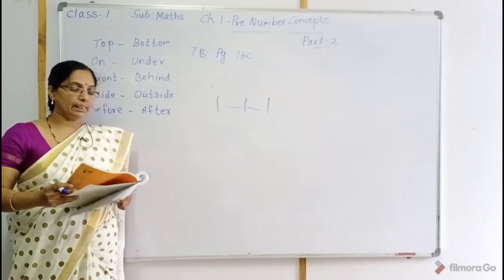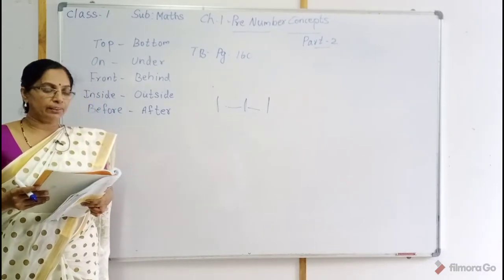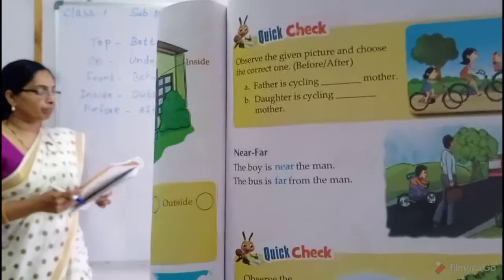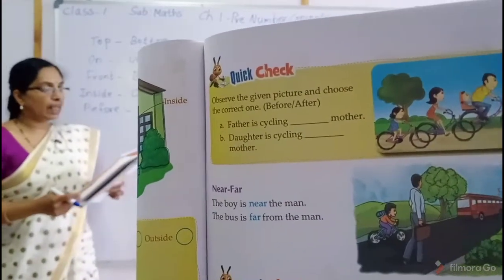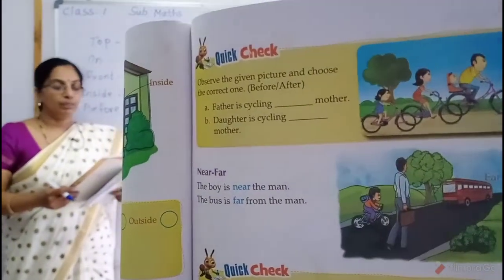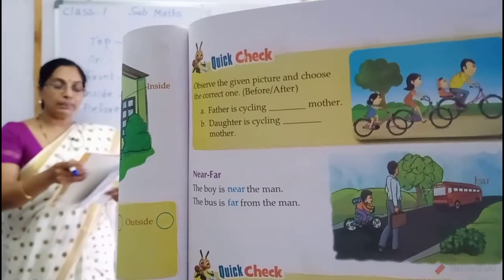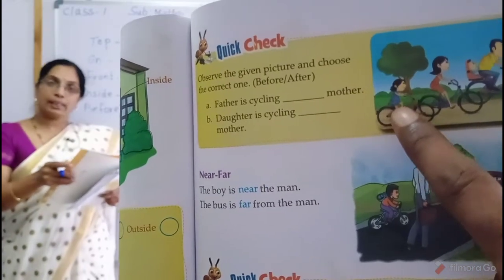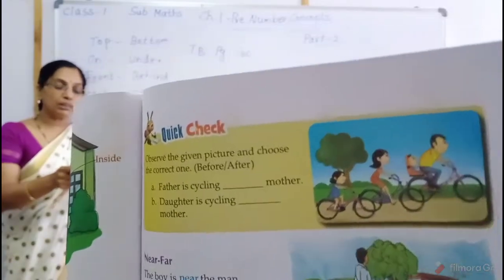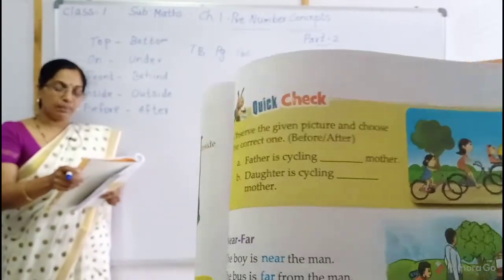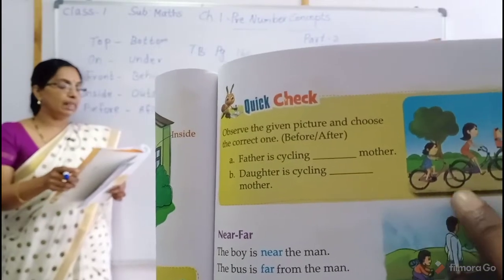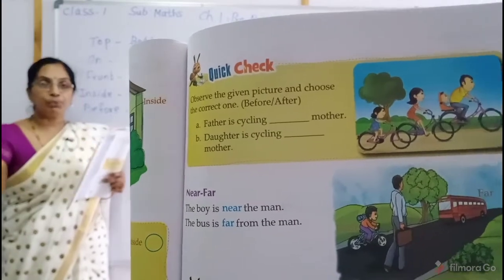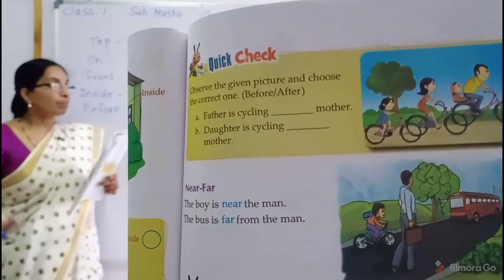Here one exercise is there. Observe the given picture and choose the correct one. Options are before and after. Father is cycling — dash — mother. You can see three persons: father, mother and girl. Three are riding cycles. Who is first? Father is first, mother is in the middle, and last is the girl. Father is cycling before the mother — he is before the mother.